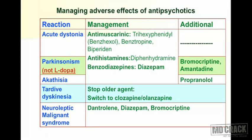The most important step for all these movements - especially tardive dyskinesia - is to stop the older typical antipsychotic agent and switch to a newer atypical agent. The best choice is clozapine and the second is olanzapine, because these two drugs are known to produce the least tardive dyskinesia. You can give clozapine or olanzapine long-term with the least chances of tardive dyskinesia.